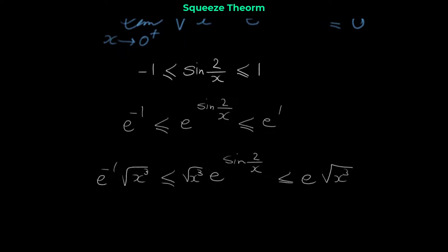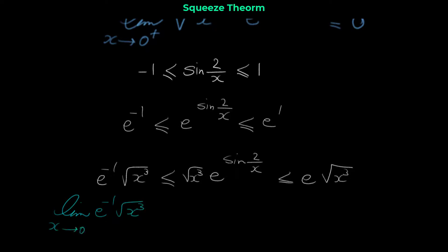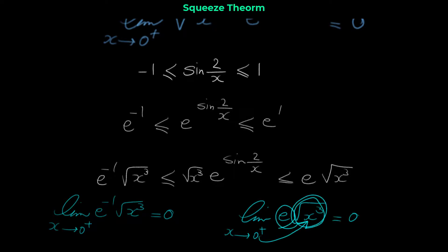Now look at this. The limit of e^(−1) · √(x³) when x approaches 0 from the right is 0. The limit of e · √(x³) when x approaches 0 from the right is also 0. Why? Because simply plugging in 0 gives 0 — e^(−1) times 0 is 0, and e times 0 is 0.